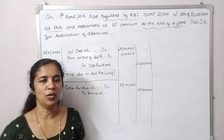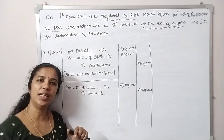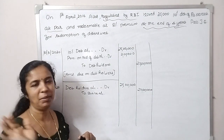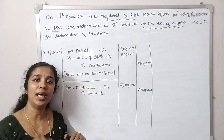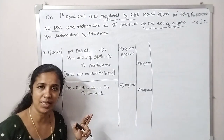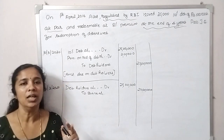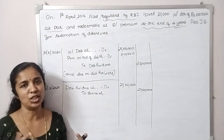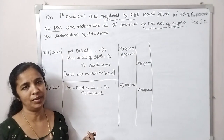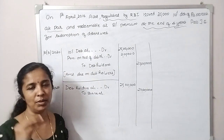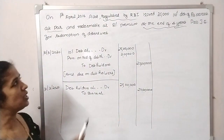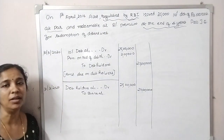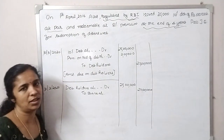What should we do here? If you want debenture redemption out of capital, the company is regulated by RBI about non-banking companies. These are regulated by RBI. Then what is the meaning of the redemption account?